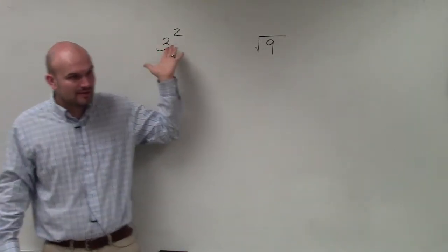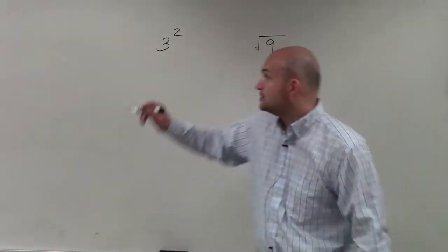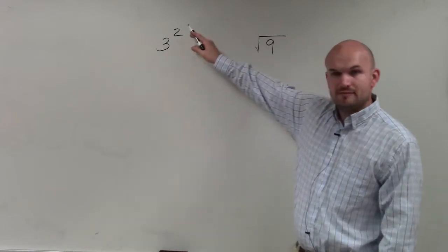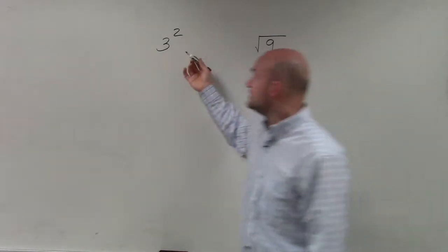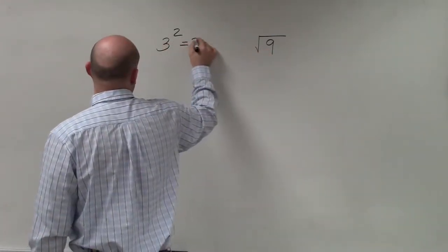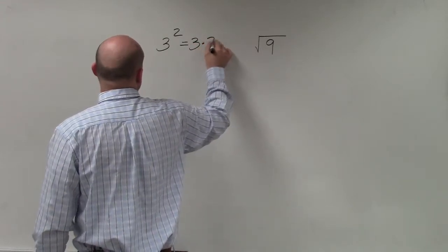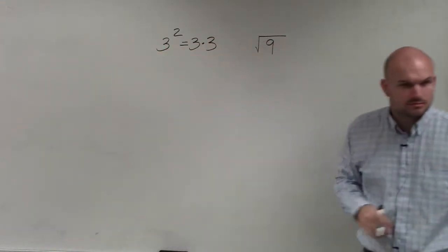Basically, if you guys remember, we have dealt with exponents, right? Remember, exponents, you have a base and you have the power. And what 3 squared basically says is 3 multiplied by itself 2 times, correct?